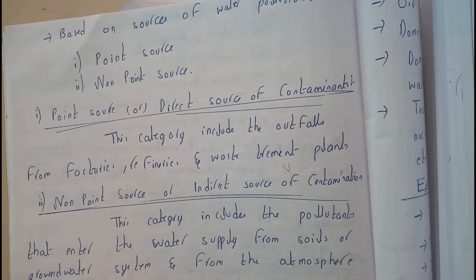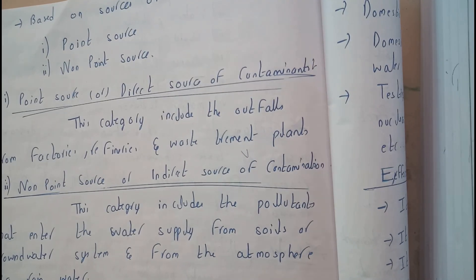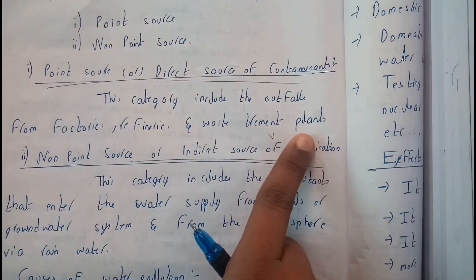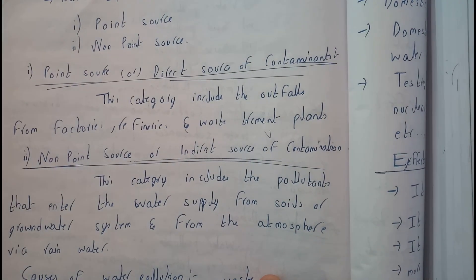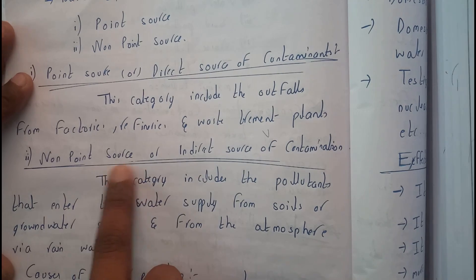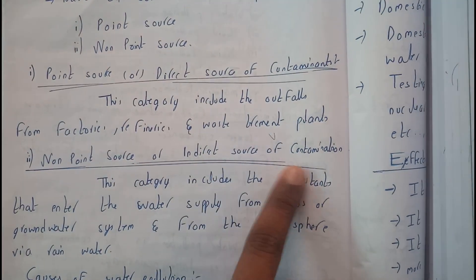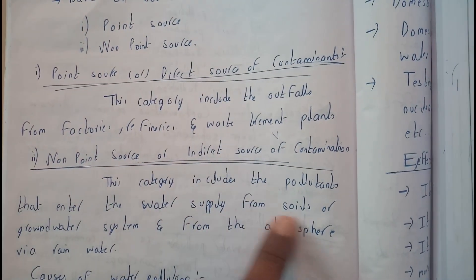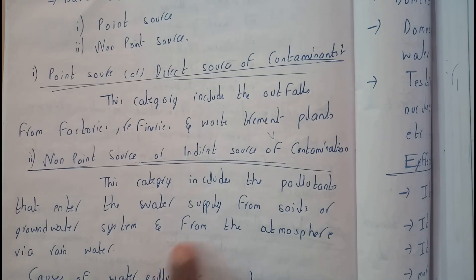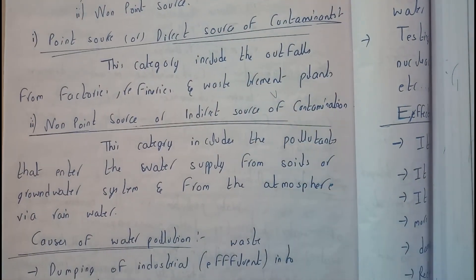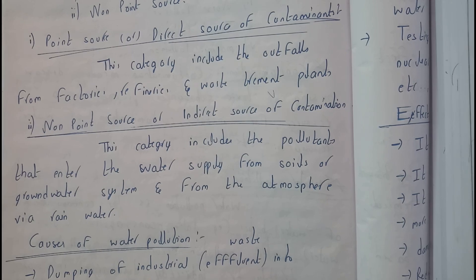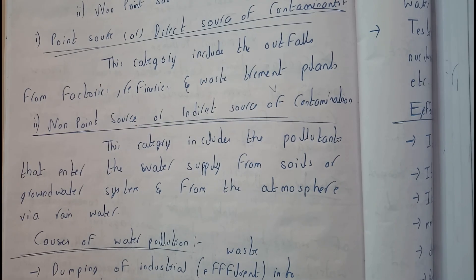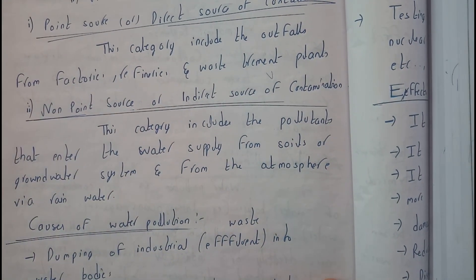Examples of point source are factories, refineries, and waste treatment plants, which directly dump waste into water resources or water bodies. Non-point sources are indirect sources of contamination — they categorize pollutants that enter the water supply from soil or groundwater systems. The main reason behind this is fertilizers, which travel through the water table and mix with groundwater, causing lots of pollution.